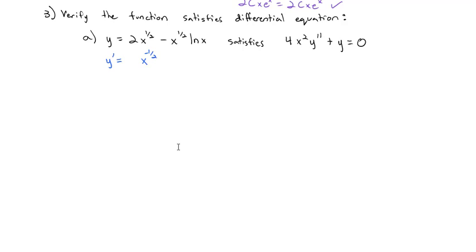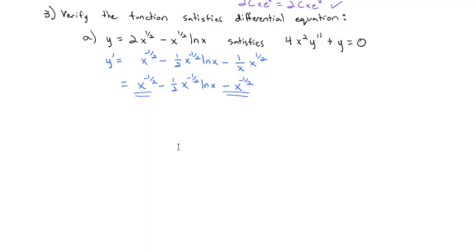The first derivative: the 2x^(1/2) term drops to x^(-1/2) as we bring the 1/2 out front and the 2's cancel. Then, using the product rule on -x^(1/2)·ln(x), we get -[1/2·x^(-1/2)·ln(x) + (1/x)·x^(1/2)]. Simplifying, x^(-1/2) terms combine: 1 - 1 = 0, leaving y' = -1/2·x^(-1/2)·ln(x).